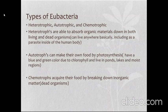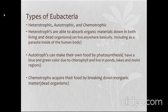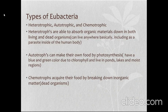Bacteria can be subdivided into three different types by mode of nutrition: heterotrophs, autotrophs, and chemotrophs. Heterotrophs are able to absorb organic materials from both living and dead organisms, and cannot make their own food, so they can live inside the human body as parasites. Autotrophs can make their own food by photosynthesis like green plants; they have chlorophyll and live in ponds, lakes, and moist regions. Chemotrophs acquire their food by breaking down inorganic matter or dead organisms.